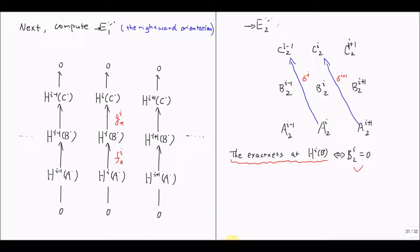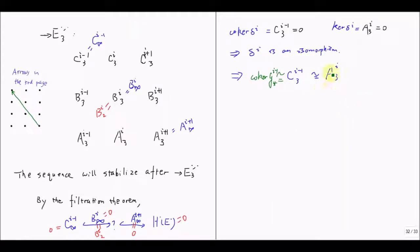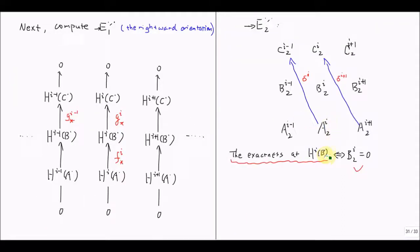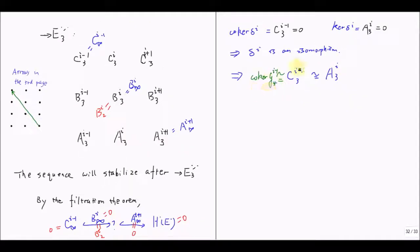This means A superscript i sub 2 is isomorphic to C superscript i-1 sub 2. This tells us the cohomology group C superscript i sub 2 is isomorphic to A superscript i sub 2. The arrow is G superscript i-1 star. And A superscript i sub 2 is the cohomology here, which is the kernel of F superscript i star. So this object is isomorphic to the kernel of F superscript i star.